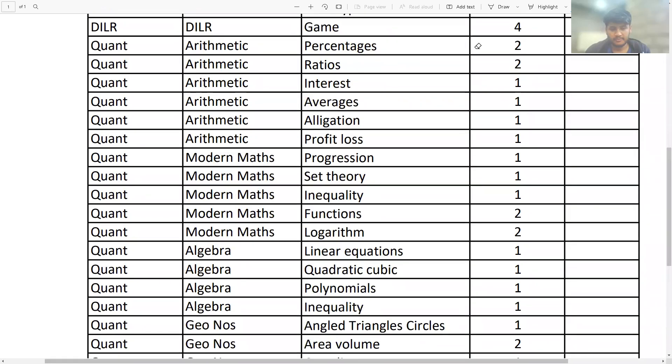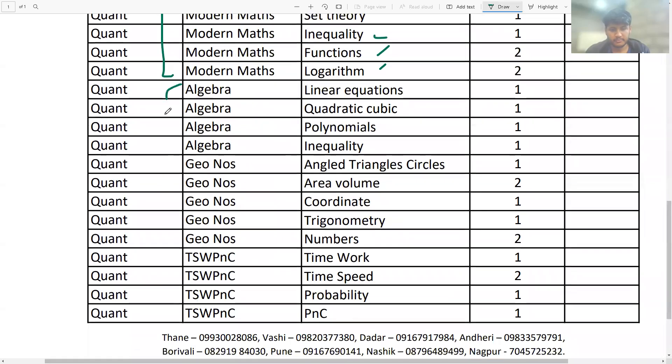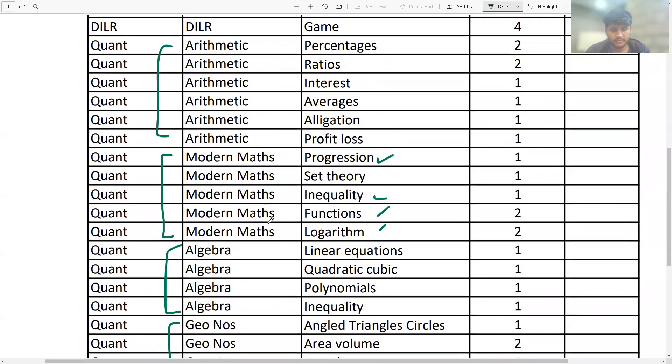So this is the breakdown of the quant section. I've divided the quant into five parts: arithmetic, modern maths, progression, inequality, functions, logs, algebra, geometric numbers, and time speed distance, time and work, PNC. There are five parts. You can't be expert in all the five areas, there has to be some weaker section, or there might be some topic you might have left. So is there any topic you're not comfortable with?